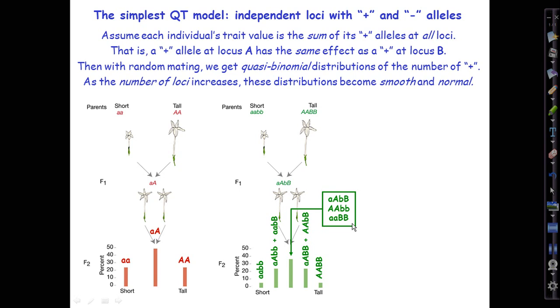Notice, little a, little a, big B, big B, is phenotypically the same, or at least similar, to big A, big A, little b, little b, or little a, big A, little b, big B. Any of those ways of doing it gets you two short-making and two tall-making alleles, and you will come out with a middling flower height.